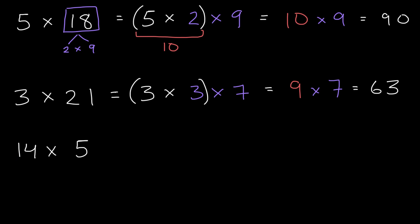Well, we could once again try to break up 14 into the product of smaller numbers. 14 is 2 × 7. So we can rewrite this as 2 × 7, or 7 × 2. And I'm writing it as 7 × 2 because I want to associate the 2 with the 5 to get the 10.